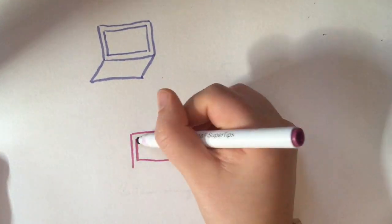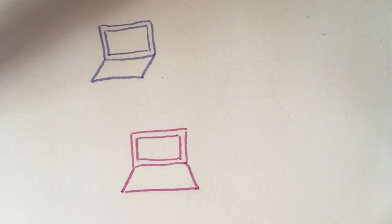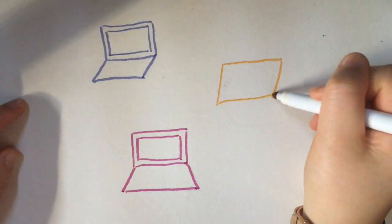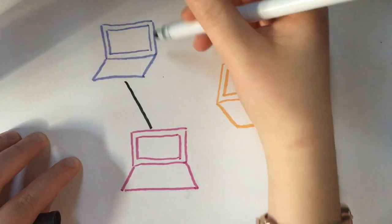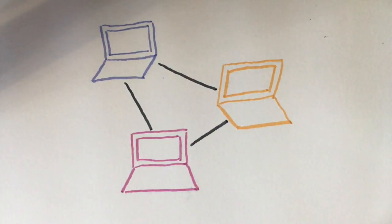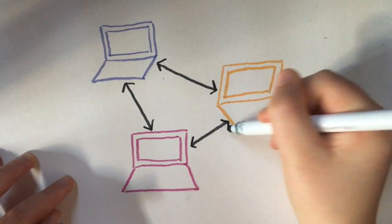A distributed system involves multiple networked computers which communicate by passing messages among each other. Since each process has its own local clock and there is no global clock, you can imagine that ordering events in the system presents a challenge.